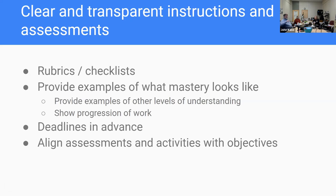Being clear and transparent about what you expect from students is really important. Using rubrics and sharing rubrics with students in advance can be very helpful. Using checklists for scaffolded activities or for each course module — whether face-to-face or online — gives students reminders of what they need to do, when it needs to be done, and what you're looking for, so they don't have to play the game of guessing what you expect, especially in higher-stakes activities.